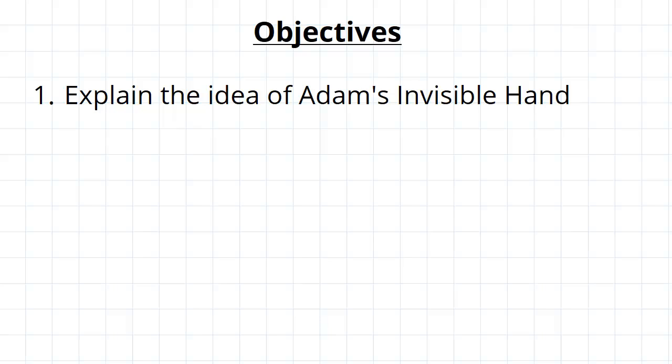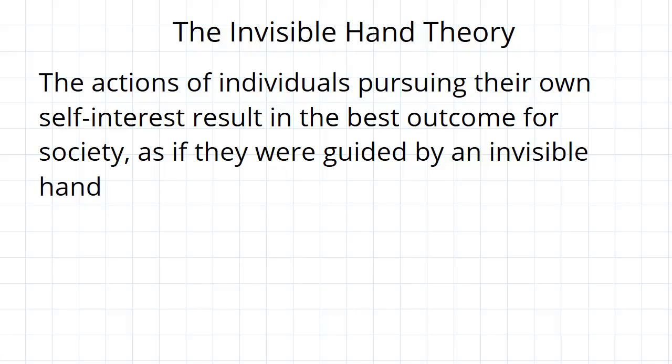So the idea of the invisible hand theory is that the actions of individuals pursuing their own self-interest, this is the key, result in the best outcome for society, as if guided by an invisible hand.